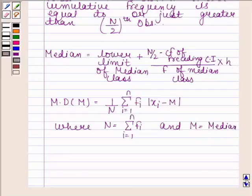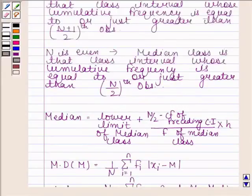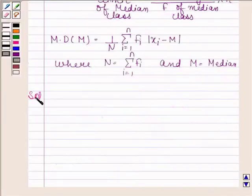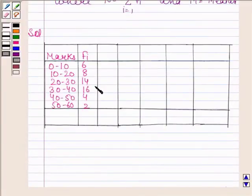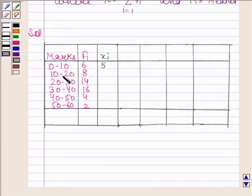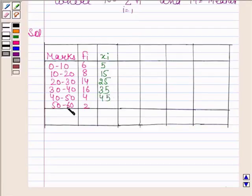Keeping all these steps in mind, let's now begin with the solution. We will first make a table. In the first two columns, we have written the given information. We will find the midpoint of each class interval. The midpoint of 0 to 10 is 5; 10 to 20 is 15; 20 to 30 is 25; 30 to 40 is 35; 40 to 50 is 45; 50 to 60 is 55.